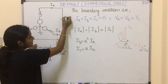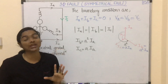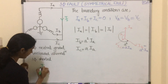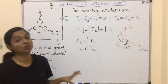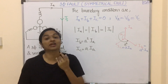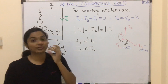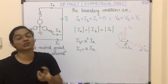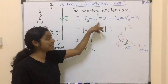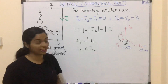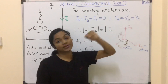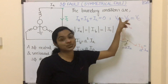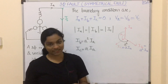The fault current If is the phase current Ia. So If is equal to Ia. Now we define our boundary conditions. The sum of Ia plus Ib plus Ic in a balanced system is always zero — that is, the neutral current is zero. So Ia + Ib + Ic = 0 is the first boundary condition. The second boundary condition is Va = Vb = Vc, since all three phases are shorted.